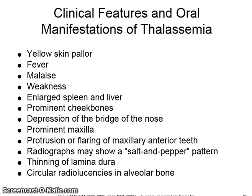Clinical manifestations of thalassemia include yellow skin, fever, malaise, weakness, enlarged spleen and liver, prominent cheekbones, depression of the bridge of the nose, a prominent maxilla, protrusion or flaring of the maxillary anterior teeth. Radiographs may show a salt and pepper pattern, thinning of the lamina dura, and circular radiolucencies in the alveolar bone.